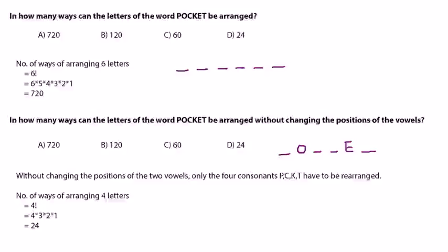In how many ways can the letters of the word POCKET be arranged? Now we have 6 letters in the word pocket. The number of ways of arranging 6 letters would be 6 factorial.